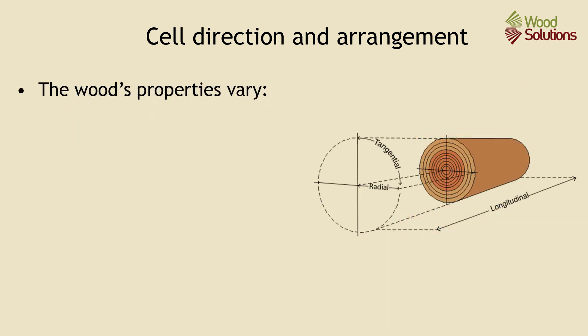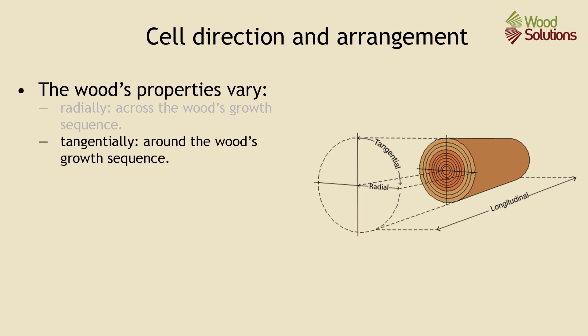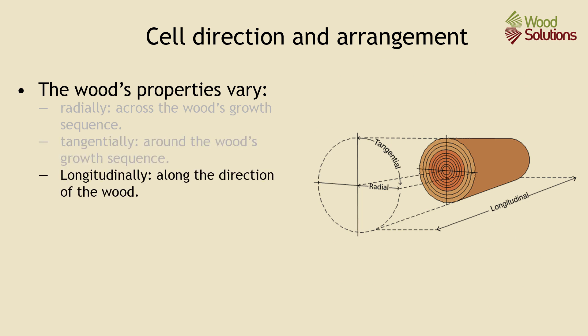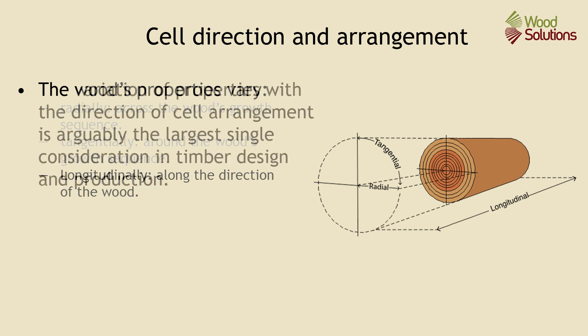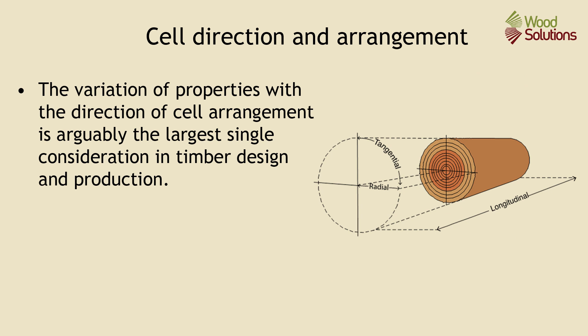When a log is harvested, the various directions of the cells in the log become clear. We can see that the cells are arranged radially across the wood's growth sequence, tangentially — that is around the wood's growth sequence — and longitudinally, that's along the direction of the wood. These different directions in cell arrangement and properties is arguably the largest single consideration that needs to be addressed in timber design and wood production.